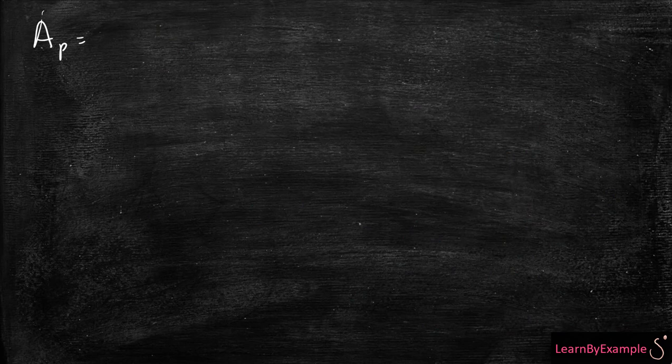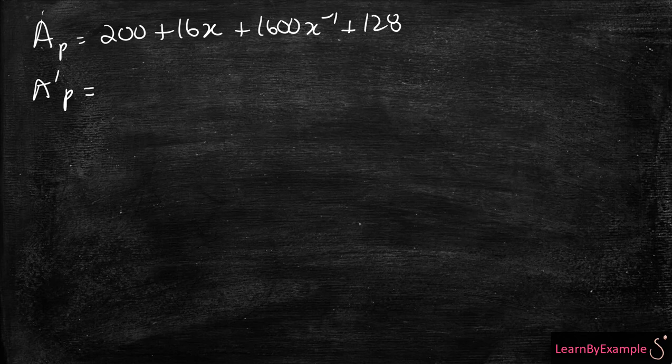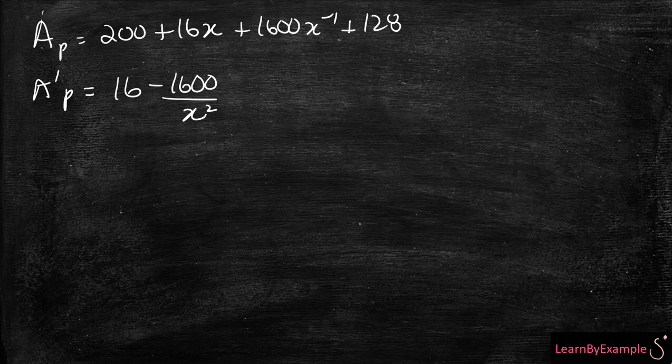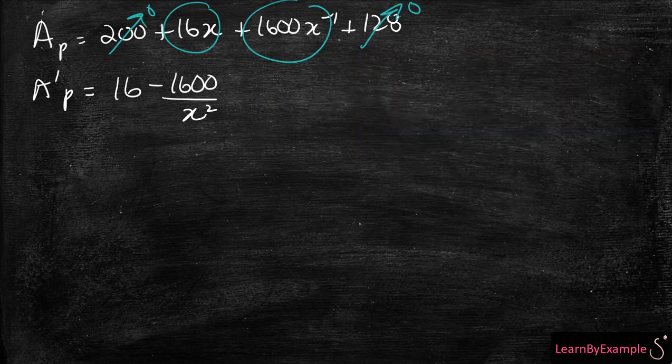So we have 200 plus 16X plus 1,600X minus 1 plus 128. Now we want to take the derivative. You're basically just going to be left with 16 minus 1,600 over X squared. You're only working with this and this because this goes to 0 and this goes to 0.